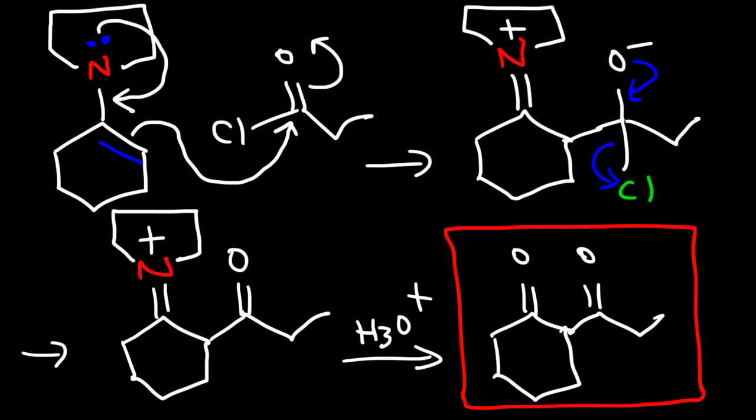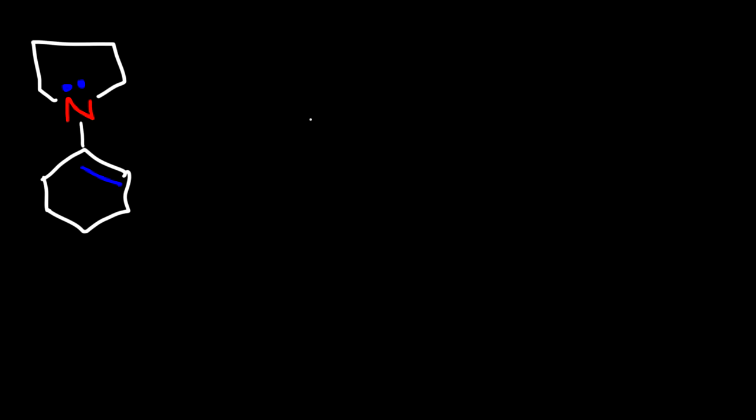So using the Stork enamine reaction, you can react with an alkyl halide, react with an acid chloride, or react with an alpha-beta unsaturated aldehyde or ketone. In that last case, this is going to be a Michael reaction. The enamine will serve as the Michael donor and the alpha-beta unsaturated aldehyde will serve as the Michael acceptor.